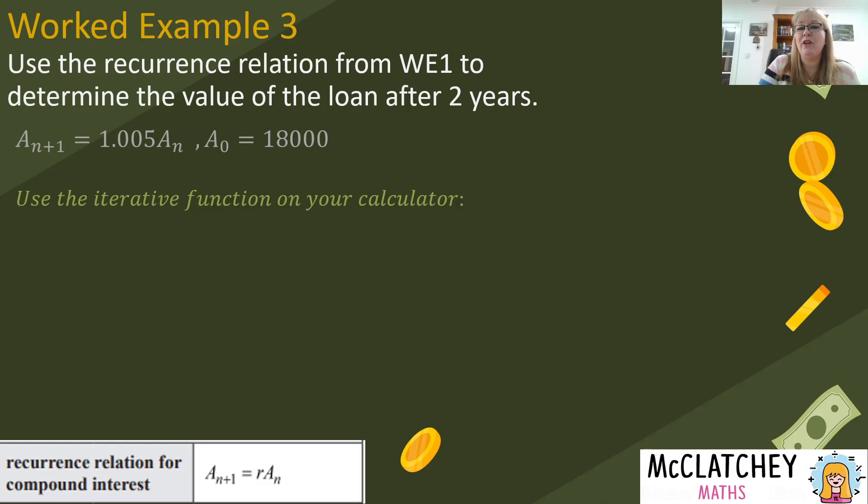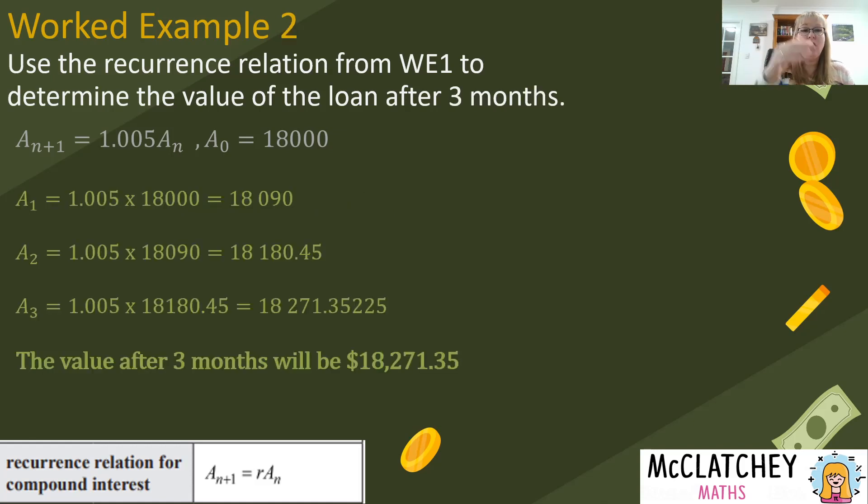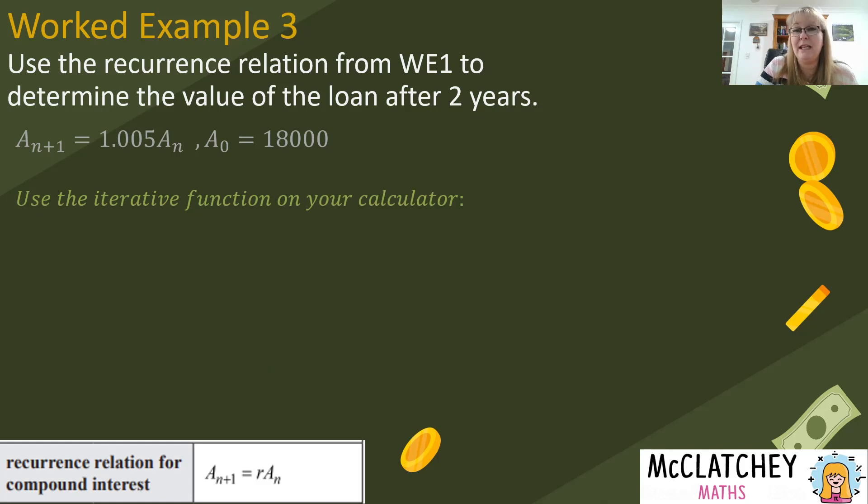Now we're going to use the recurrence relation from our first worked example to determine the value of the loan after two years. Now that is not a subscript 2, it's actually a subscript 24 because it's compounding monthly and there's 12 months in a year so we're actually going to have to apply that process 24 times. Now you could literally sit there and write that out like we did on that previous example. You could sit there if you wanted to and write it all out and do it 24 times, super tedious. There is something on your calculator called the iterative function which will do it for you. So let's jump on to doing that now.